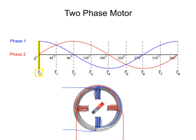At time 0, phase 1 produces maximum vertical magnetic flux, and the rotor aligns itself vertically with the stator poles. Because phase 2 provides no current flow to the stators, there is no horizontal pole on the rotor.